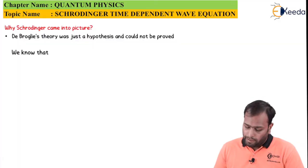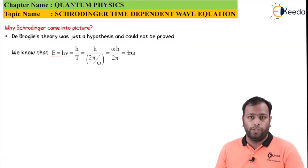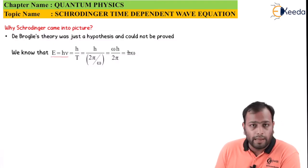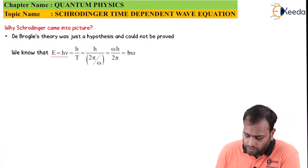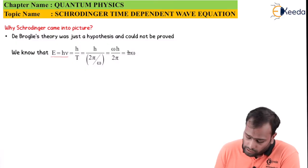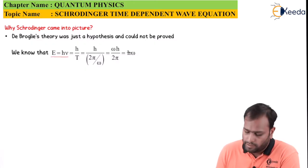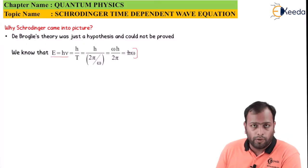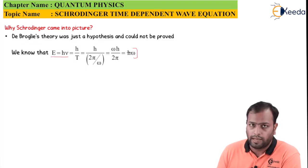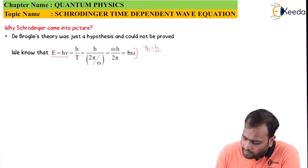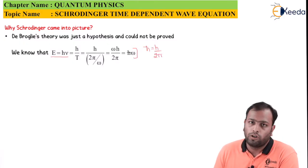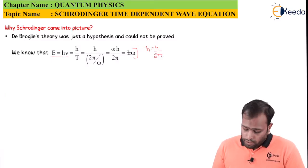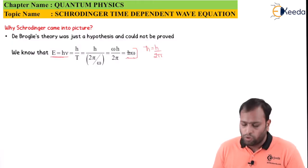We know that energy is given by E = hν, where ν is the frequency. This frequency can be written as 1/T, so the equation becomes E = h/T. Now, replacing T with 2π/ω (since the time period is 2π/ω), we get E = ωh/2π, which equals ℏω. Here, ℏ (h-cross) is h/2π, also called the normalized or standardized Planck's constant. So energy equals ℏω.